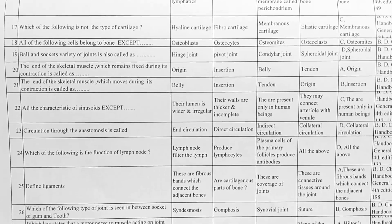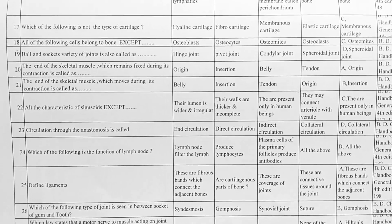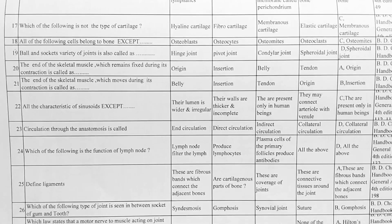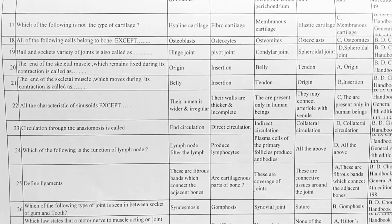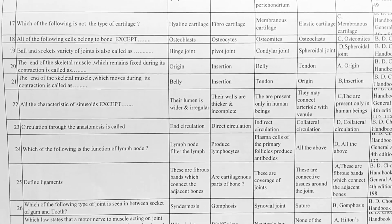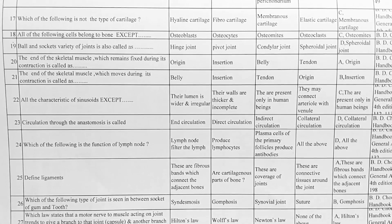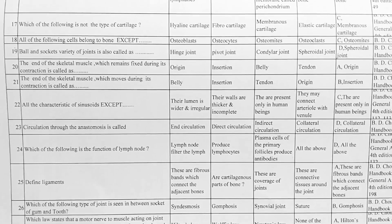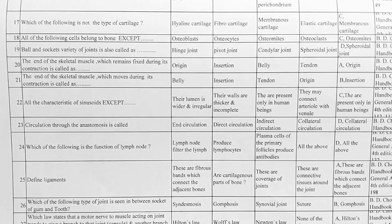Next, which of the following is not a type of cartilage? Option A. hyaline cartilage, B. fibrocartilage, C. membranous cartilage, D. elastic cartilage. Correct answer is option C, membranous cartilage.